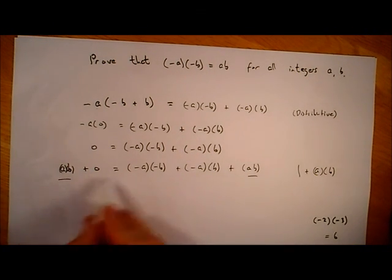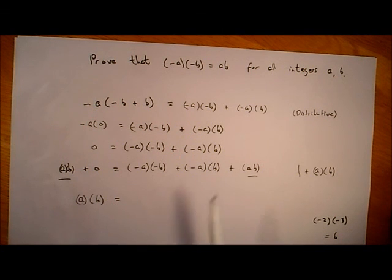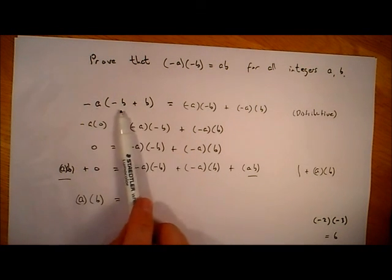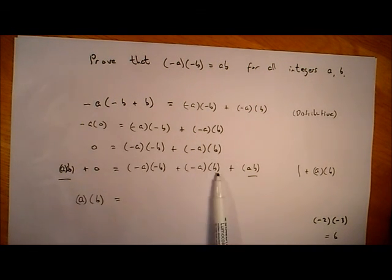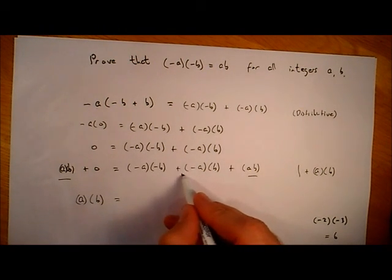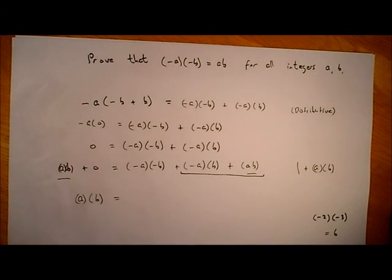Okay, so now the left-hand side, ab plus zero is just ab, is equal to, now if you look at the right-hand side, we've got minus ab and we've got plus ab up here. We said that b was the additive inverse of minus b, so minus ab is the additive inverse of ab. So when I add these two parts together, if I add that to that, I'm going to get zero.